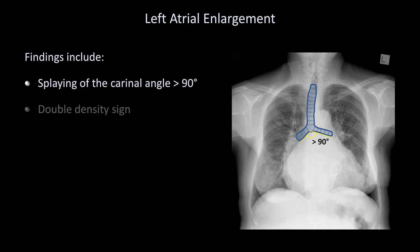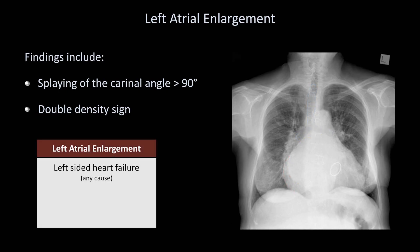The second finding is something called the double density sign. Usually the right border of the left atrium is not visible on x-ray because it is contiguous with the right atrium and lies right in the middle of the chest, where it gets obscured by other structures. However, as the left atrium increases in size, it stretches well across the midline and creates a second shadow along the right heart border. The dark red line here is the right atrium; the pink line is the left atrium. Etiologies of left atrial enlargement include any cause of left-sided heart failure, as well as mitral valve disease such as mitral stenosis, mitral regurgitation, or mitral valve prolapse.